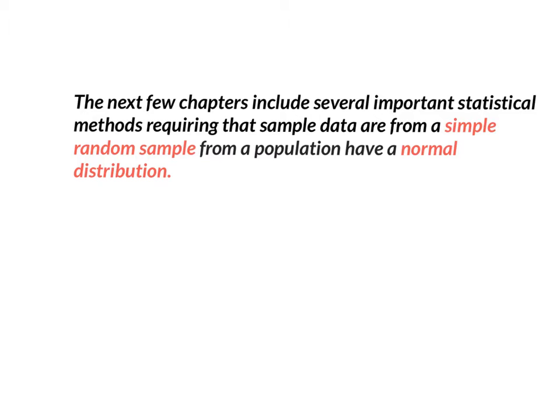The next few chapters include several important statistical methods requiring that sample data are from a simple random sample from a population that has a normal distribution. So two things have to be true over the next several weeks: we have to have stats from a simple random sample and the population must have a normal distribution.